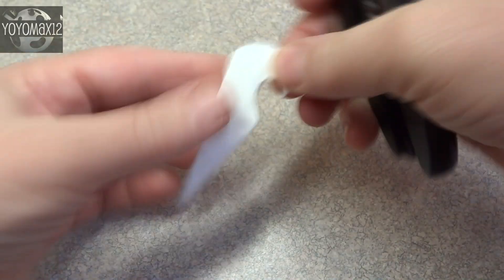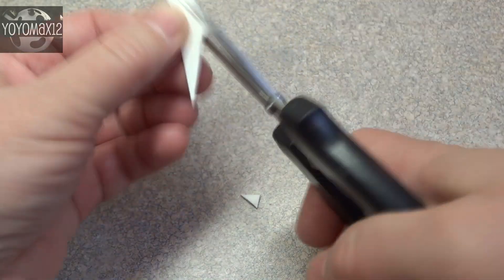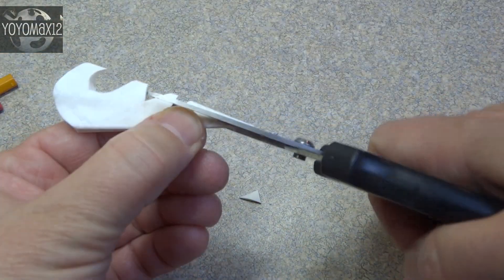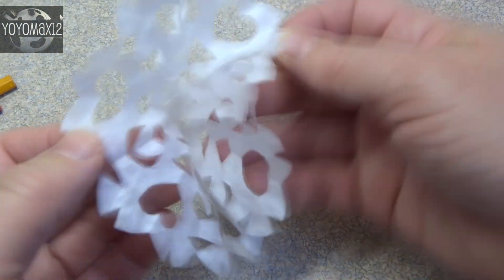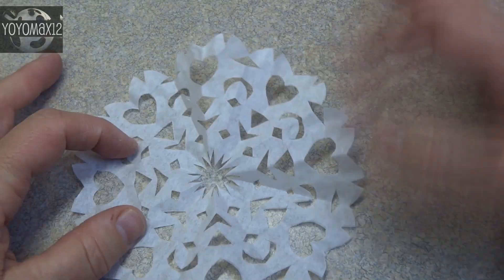And then just like making any cut out paper snowflake, you're going to go along the edge of that little cone and cut out different shapes. And once you're done, you'll open it up and you will have your completed snowflake, and we're going to set that aside for a little bit later.